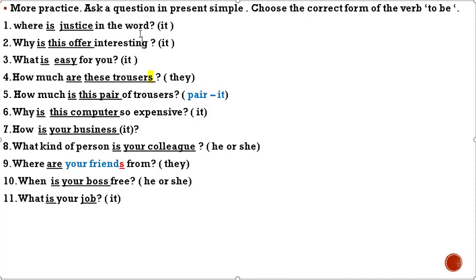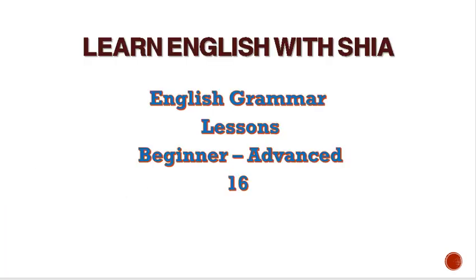Here are the answers: 'What is just in the world?', 'Why is this offer interesting?', 'What is easy for you?', 'How much are these trousers?', 'How much is this pair of trousers?', 'Why is this computer so expensive?', 'How is your business?', 'What kind of person is your colleague?', 'Where are your friends from?', 'When is your boss free?', 'What is your job?' That's all about present simple 'to be' special questions. Thank you!